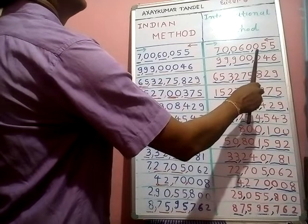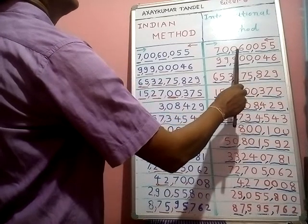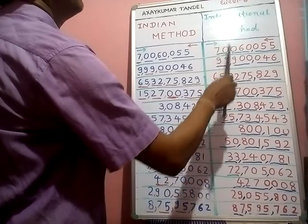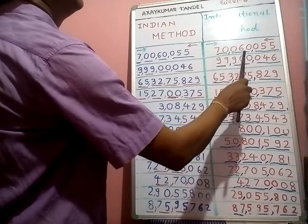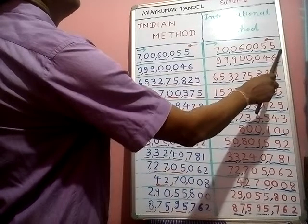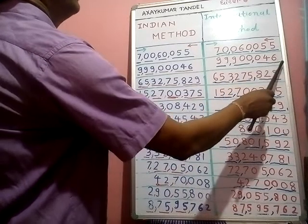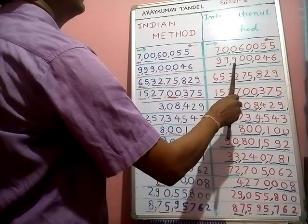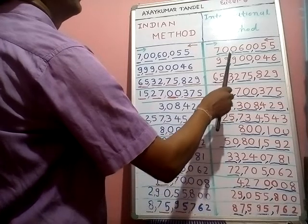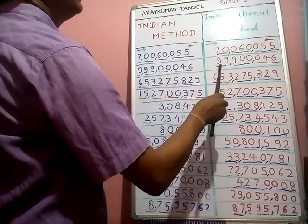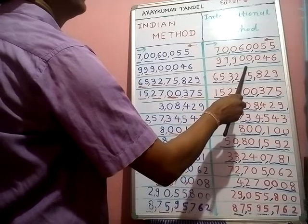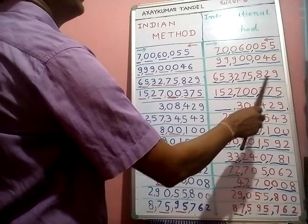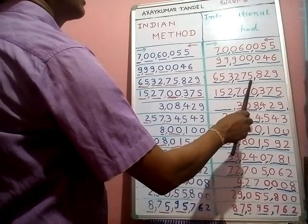International method place values: ones, tens, hundreds, thousands, ten thousands, hundred thousands, millions, ten millions, hundred millions. First example: we read seventy million sixty thousand fifty-five. Next one — ones, tens, hundreds, thousands, ten thousands, hundred thousands, millions, ten millions.